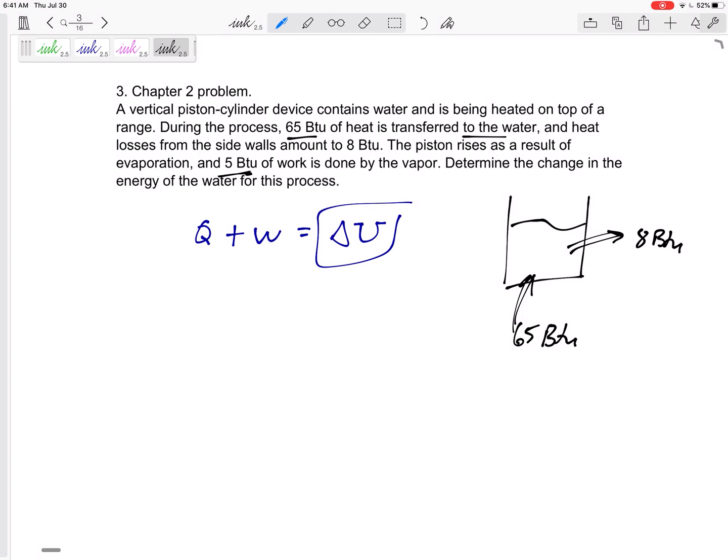The piston rises doing 5 BTUs of work done by the vapor. Let's talk about that. Alright, so first let's just sum up all the Qs. We've got positive 65 BTU, we've got negative 8 BTU. And what is this 5 BTU of work done by the vapor? That is going to be negative 5 BTU.